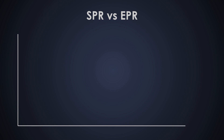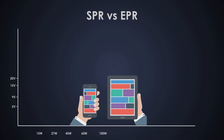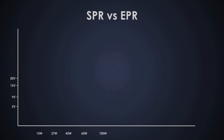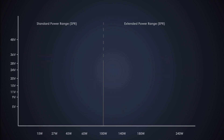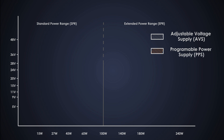With the Standard Power Range, power levels go up to 100 watts at fixed voltages of 5V, 9V, 15V, and 20V — great for smaller devices like smartphones and tablets. The Extended Power Range expands that to 240 watts with higher voltages, opening up a whole new world for power-hungry devices. EPR is particularly useful in applications such as industrial tools, high-performance laptops, power stations, and electric bikes. Two essential components in the USB PD ecosystem are Adjustable Voltage Supply (AVS) and Programmable Power Supply (PPS), both designed to enhance flexibility and efficiency.